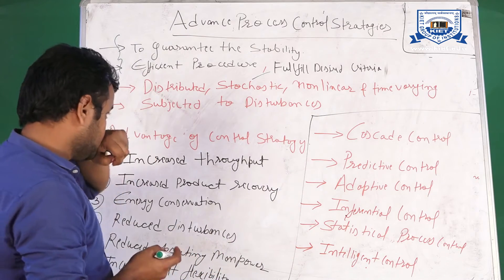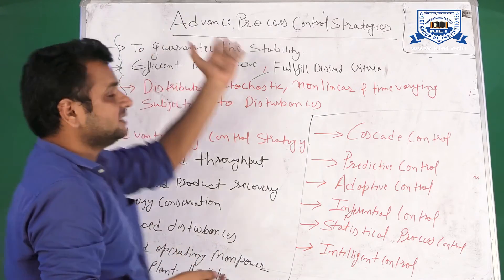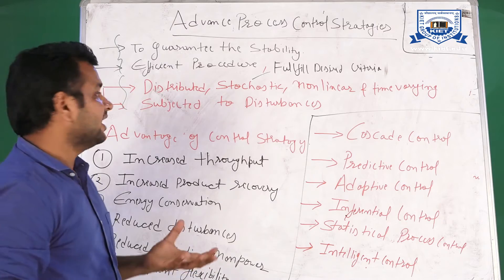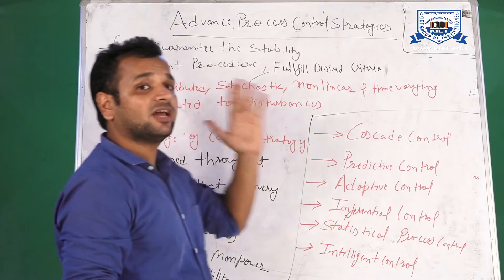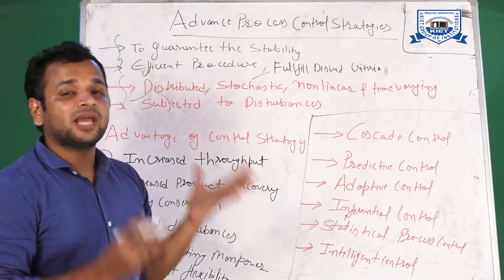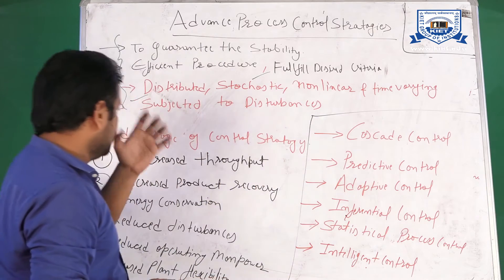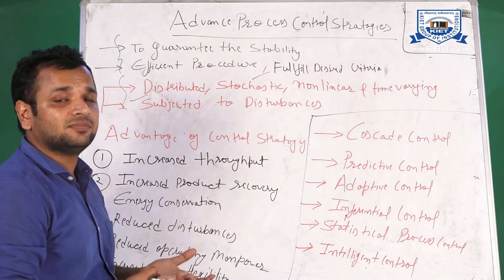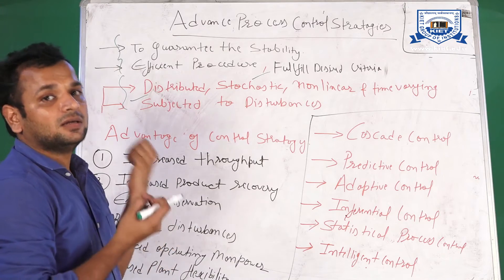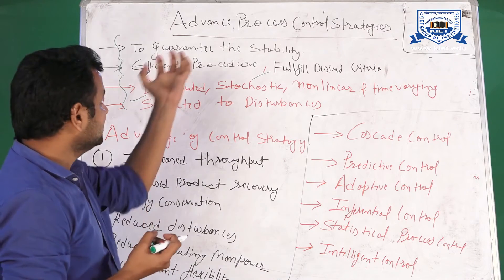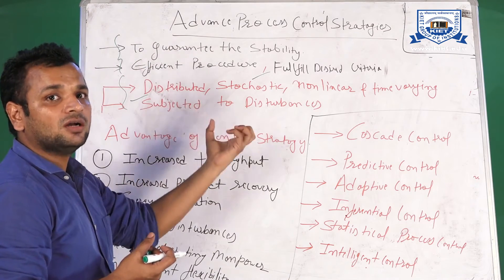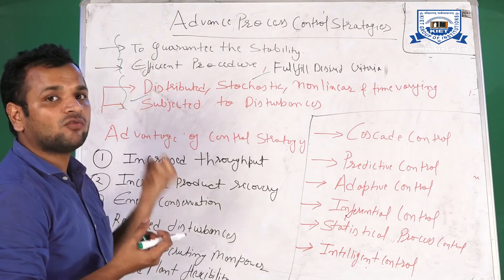The advantage of advanced control strategies is that we can apply them when the behavior of a process is distributed, stochastic, non-linear, or time-varying, or when the process or system is subjected to certain types of disturbances. In such cases, we need advanced control strategies to stop or reduce the effect of those disturbances on our process output.